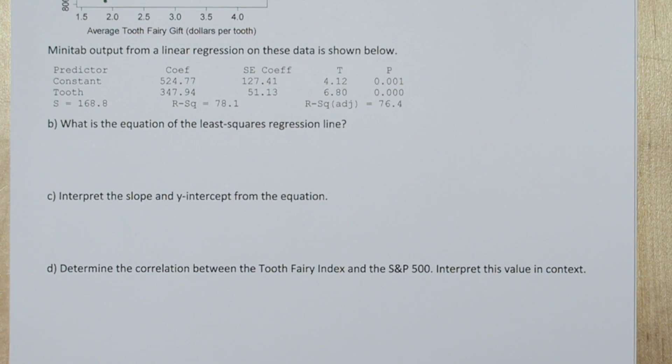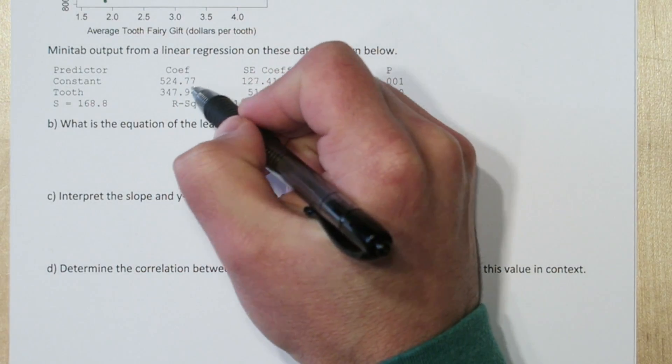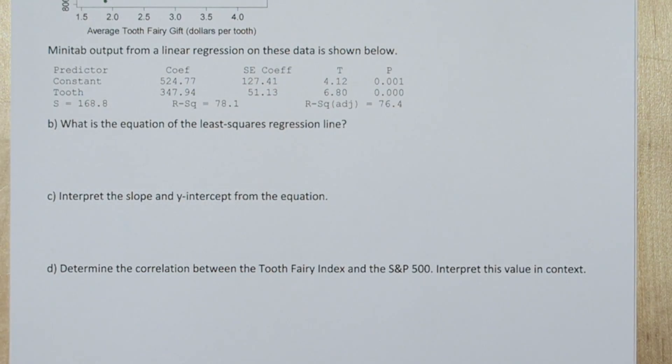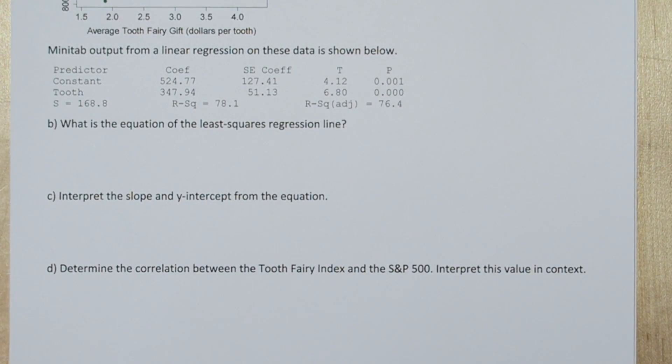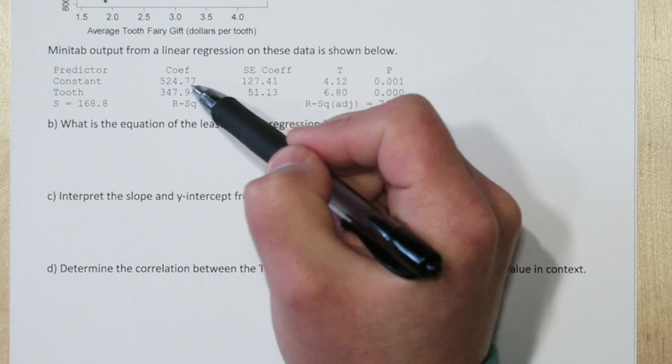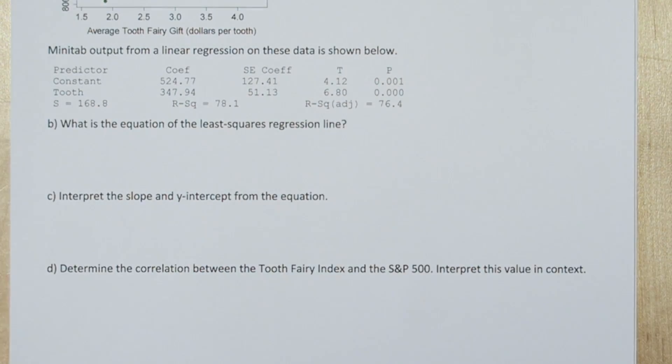Now the slope and the y-intercept can be found right here under coefficients in our Minitab output. The slope is the coefficient of tooth, our explanatory variable. And the coefficient for constant, this is our y-intercept.